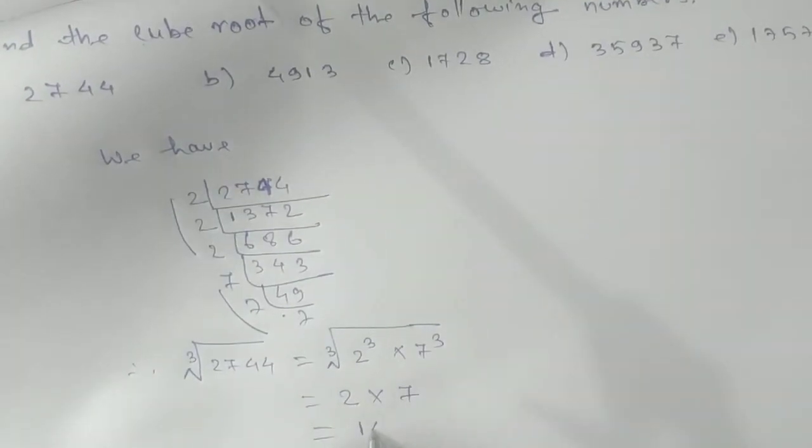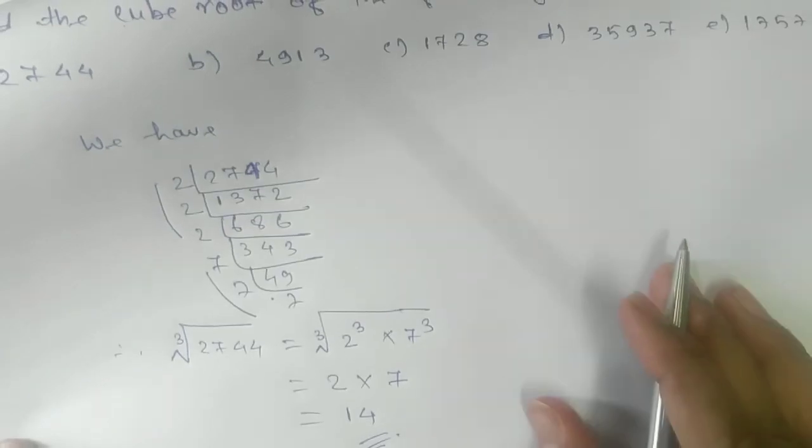So 2 times 7 equals 14. That is, cube root of 27744 is 14. This is your answer.